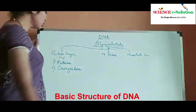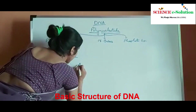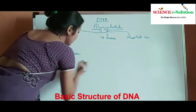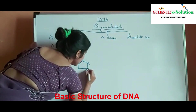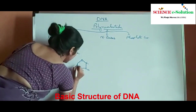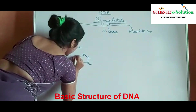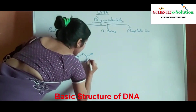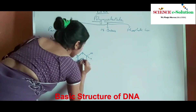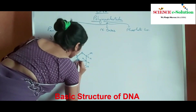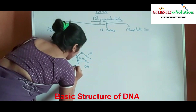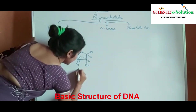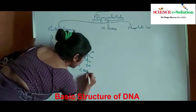Now let us see the structure of a ribose sugar. As I have said, it is a five carbon sugar. This is carbon number one, carbon number two, carbon number three, carbon number four, and carbon number five. The substituents are OH, H, H, OH, H, OH, CH2, OH. So this is the structure of a typical ribose sugar.